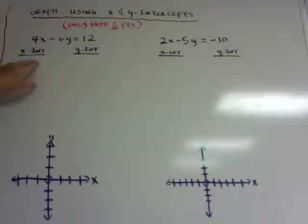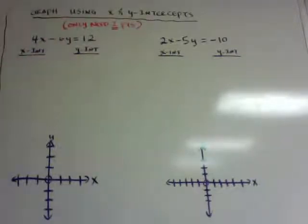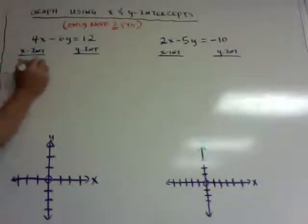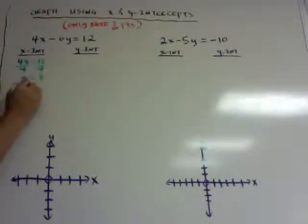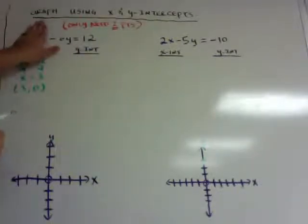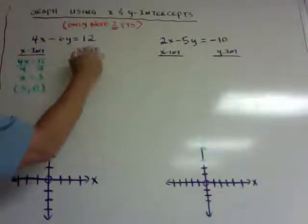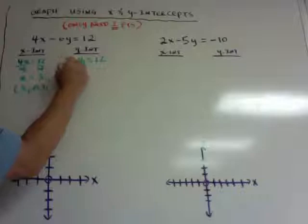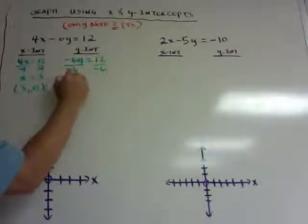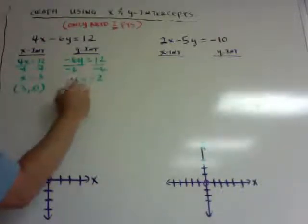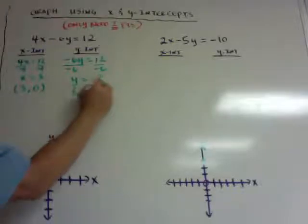Find the x and y intercepts. For the x intercept, cover up the y and get 4x equals 12. Divide by 4, x equals 3, so that's (3, 0). For the y intercept, cover up the 4x — and that's why I left the sign — negative 6y equals 12. Divide by negative 6, y equals negative 2, so the coordinates are (0, negative 2).